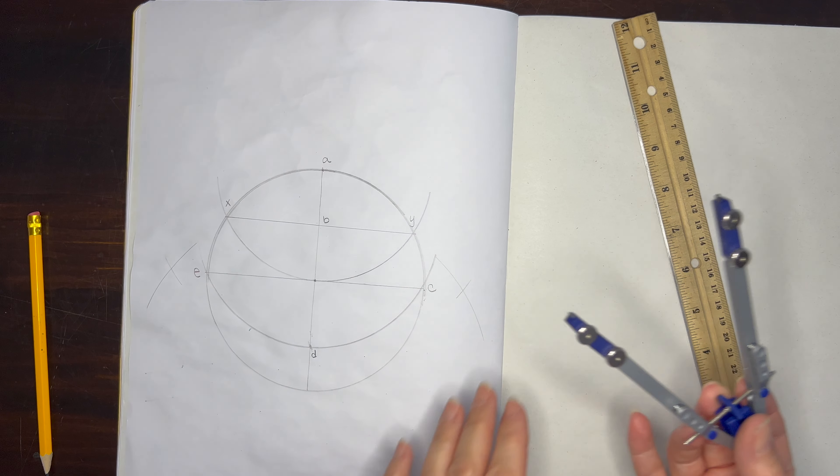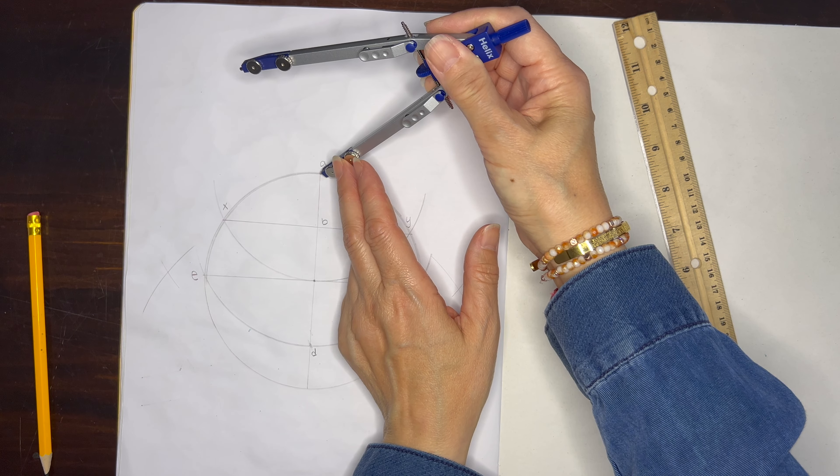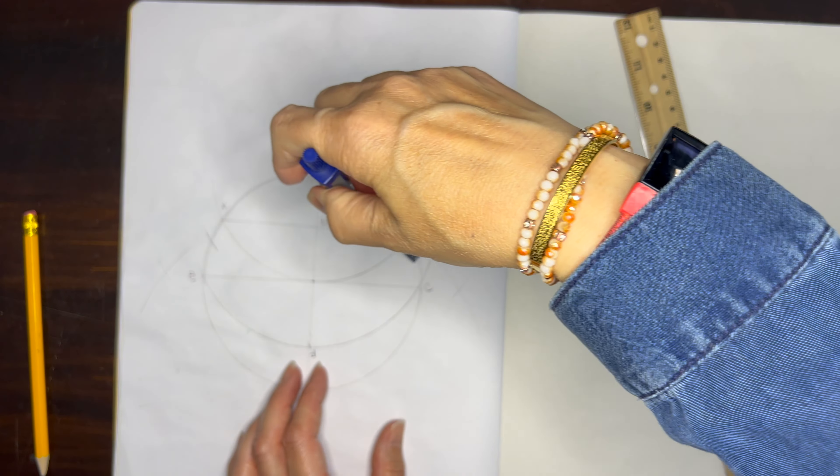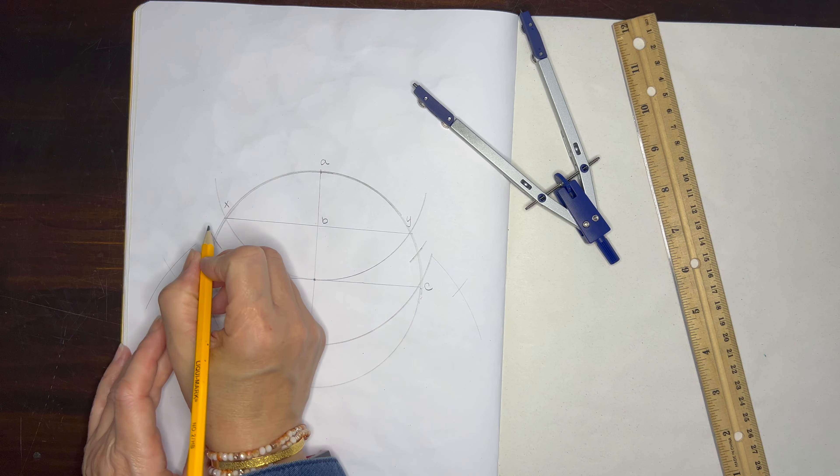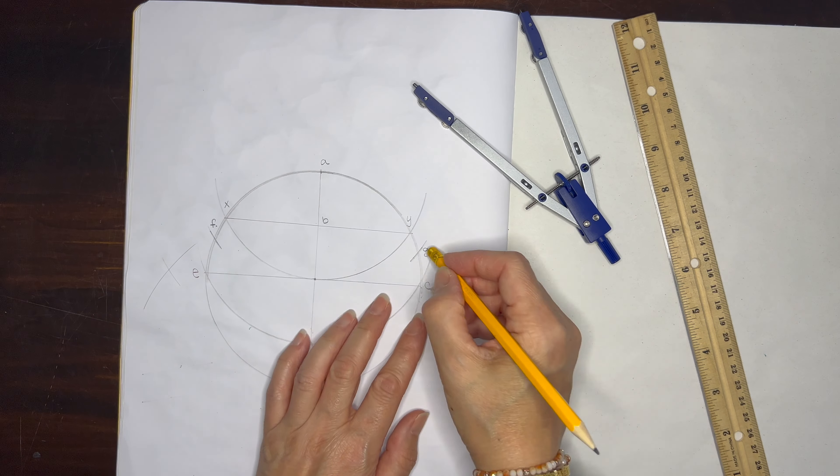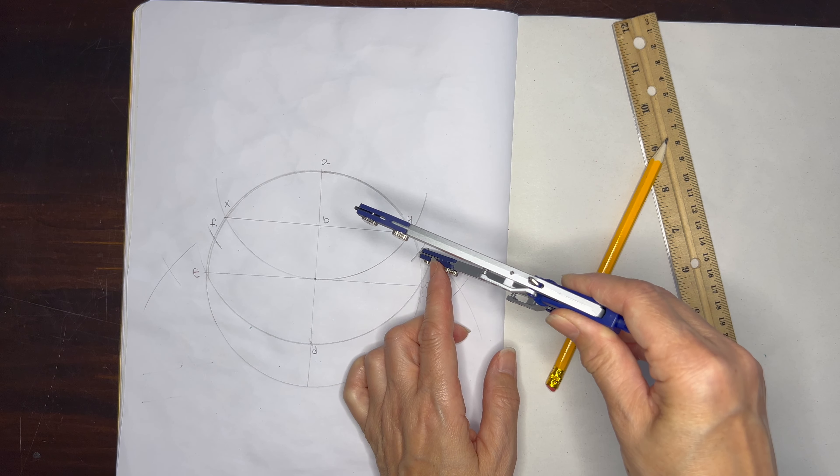So we can place it at point A and now we're going to swing an arc on either side. It might be easier to erase all of these extra arcs and lines first, but if you can keep track of where you are swinging your arc then you will be accurate in where to place your compass, because now we want to place it on one of those arcs.